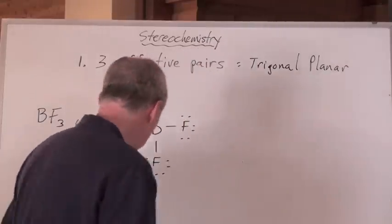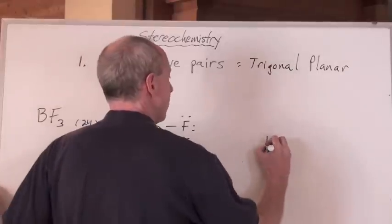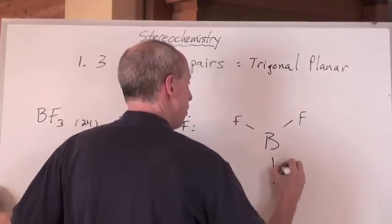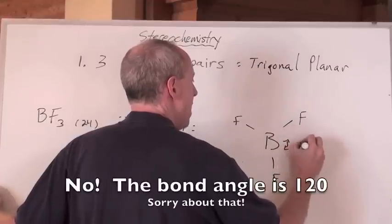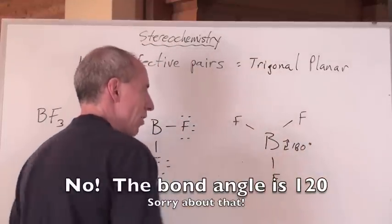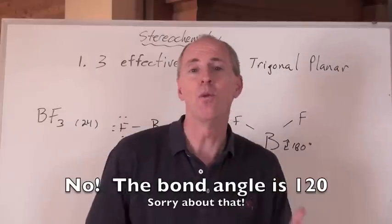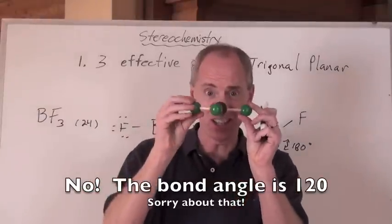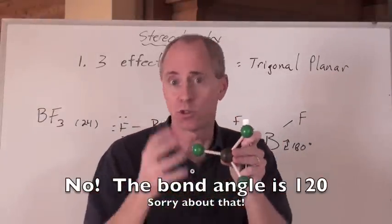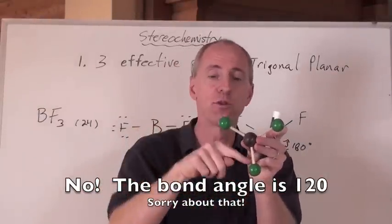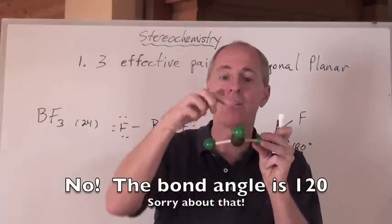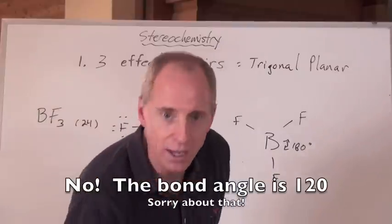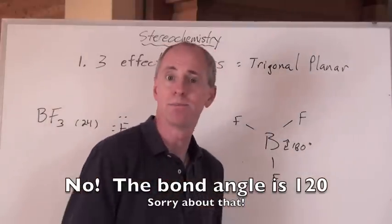So every one of the fluorines is going to be, now this is how you would draw the shape. All you have to do is draw the F's at a bond angle of 180 degrees from each other, and that is called trigonal planar. Why? Because it lies flat, right? It's flat, so it's planar. Trigonal, because it's got three in the plane. Three in the plane, on the outskirts of the plane, with the central atom in the middle, gives you that trigonal planar shape.